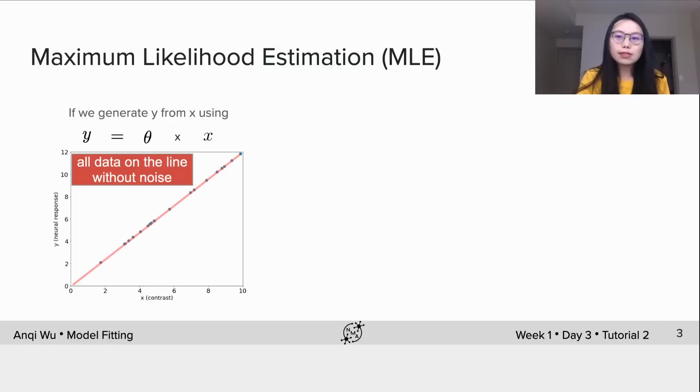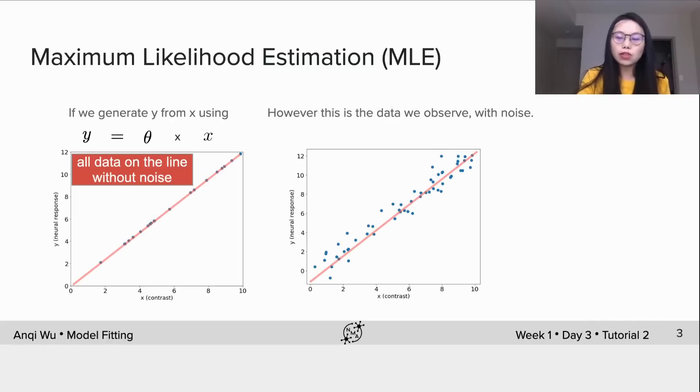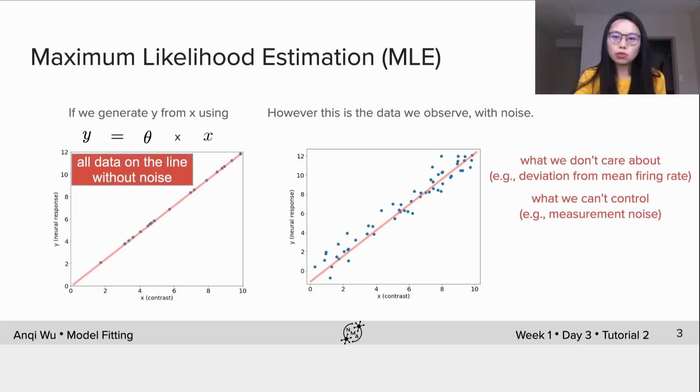However, this is the data we usually observe in real world scenarios. There is deviation from data to the line, which is usually referred to as noise. Noise could mean something we don't care about, for example, the deviation from mean fair rate, or it can be what we can control such as the measurement noise.